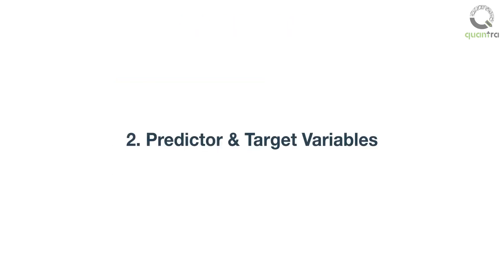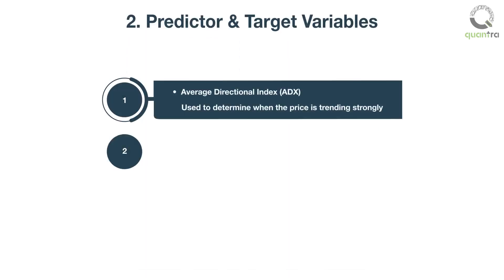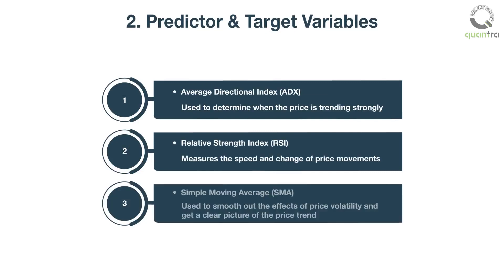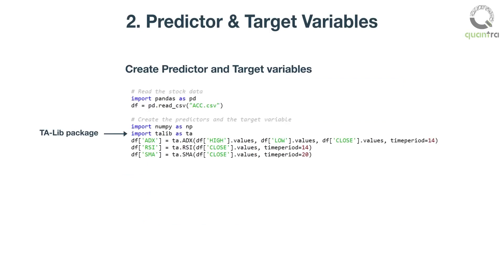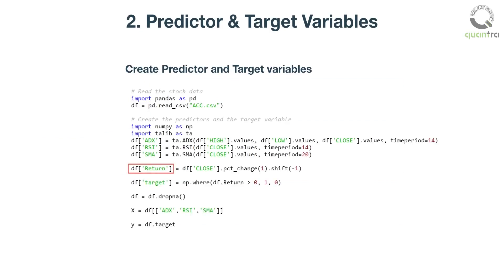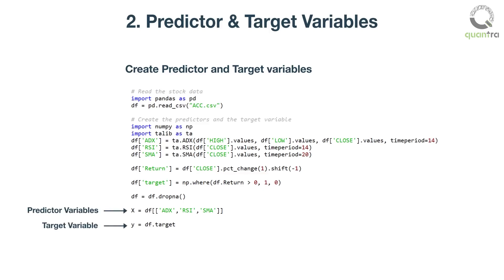The second step is to create and define predictor variables and the target variable. The predictor variables we need to create are the average directional index, relative strength index, and simple moving average. To create these indicators, we will use the TA-lib package, which has inbuilt functions for various technical indicators. The target variable is the 1-day future returns, which we classify into two labels: 0 for negative returns and 1 for positive returns. We label the predictor variables as X and the target data label as Y.